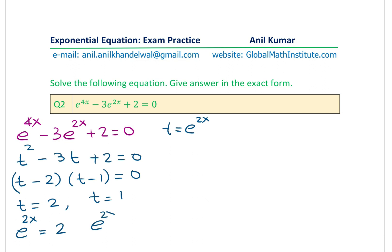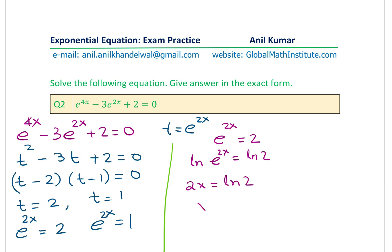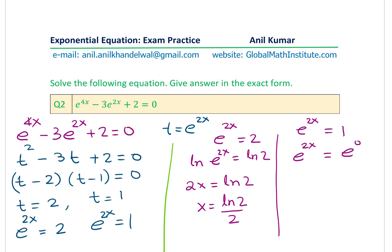We substitute back t equals e^(2x). For e^(2x) equals 2: taking ln both sides gives 2x equals ln(2), so x equals ln(2)/2. For e^(2x) equals 1: since anything to the power of 0 is 1, we have e^(2x) equals e^0, meaning 2x equals 0, so x equals 0. Our two solutions are x equals ln(2)/2 or x equals 0.